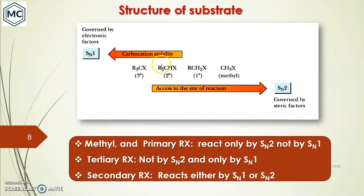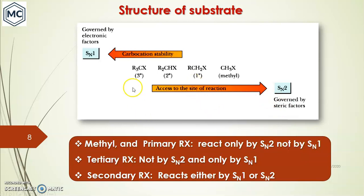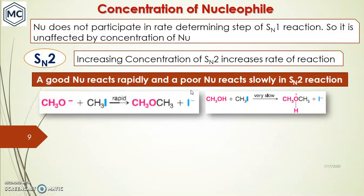The SN2 reactivity order is exactly opposite to SN1. In SN1 the order is governed by electronic factors (carbocation stability), whereas in SN2 it is governed by steric factors. Methyl and primary alkyl halides react only by SN2, not by SN1. Tertiary halides react only by SN1, not by SN2. Secondary halides can react by both mechanisms.